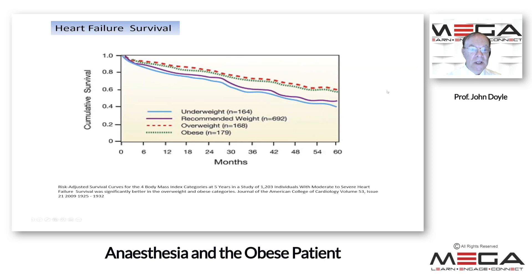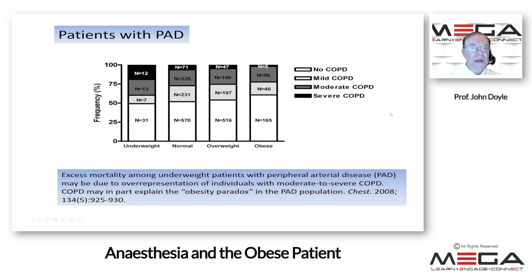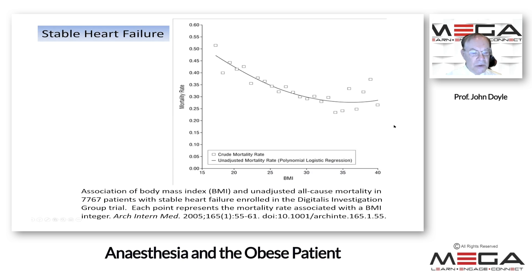For heart failure survival, obese and overweight patients did better than underweight or recommended-weight patients. In patients with peripheral artery disease, many underweight patients had associated severe COPD, and excess mortality among underweight patients may be due to overrepresentation of individuals with moderate to severe COPD. For over 7,000 patients with stable heart failure enrolled in the Digitalis Investigation Group, the mortality rate was best among patients who were overweight or slightly obese.